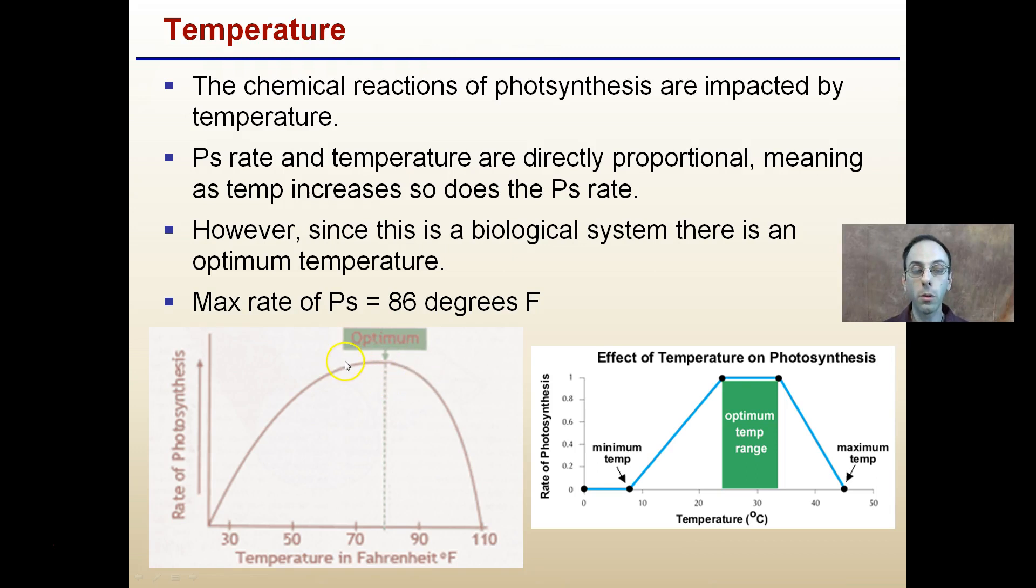Anything above or below that is going to be below maximum. Now, if we get too high, we notice that our rate does drop off significantly. Proteins are starting to denature and there's other issues. Below 86, there's just not enough energy to move those molecules fast enough. 86 is considered the optimum temperature. Anything above that, again, we see a dramatic decrease, and below that we're noticing an increase up to that point.